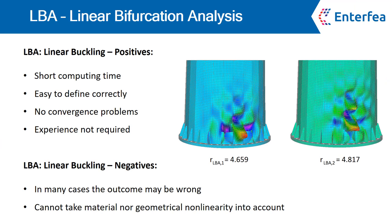First, let's talk about what linear and non-linear buckling really are. Linear buckling is an analysis that allows you to quickly estimate the buckling capacity of the model. It computes really fast, is easy to define correctly, and basically there are no convergence problems, which means that it doesn't require a lot of experience. You get a load multiplier which informs you by which number you have to multiply the applied loads to reach the load that causes stability failure of the ideal model.